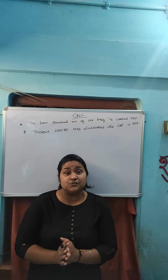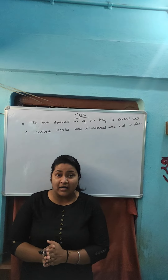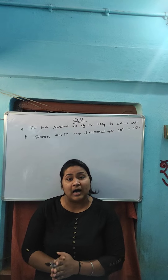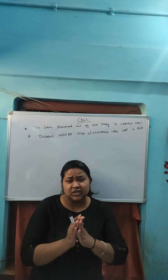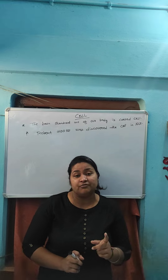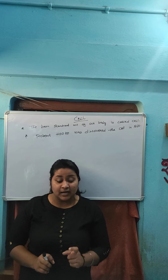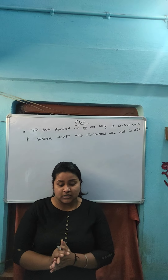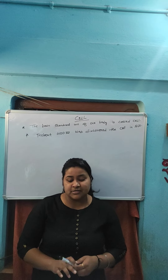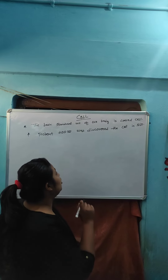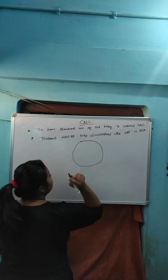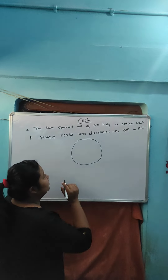A question also arises: what is cork? Cork is a part of the bark of a tree. He took a very thin slice of cork and observed it under a microscope. He noticed partitions, boxes, or compartments in the cork slices. Here I draw a very rough diagram of the slice of what he observed under the microscope.